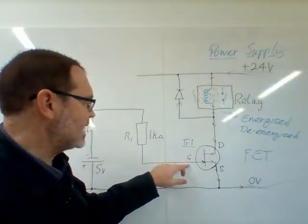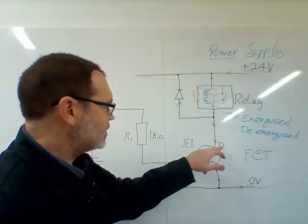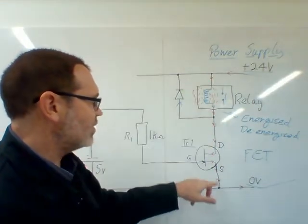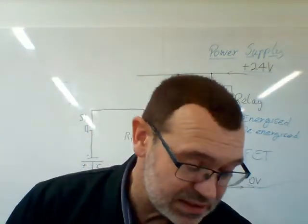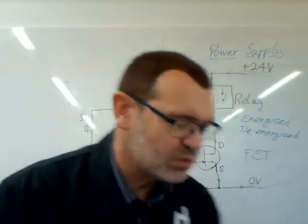So there's no voltage on the gate, the drain is connected to the source, and effectively we've got current flowing through here.